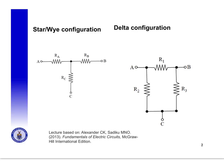Sometimes it's not possible to simplify a circuit by combining resistors in parallel and resistors in series. In those cases we can sometimes use star-delta transformations.